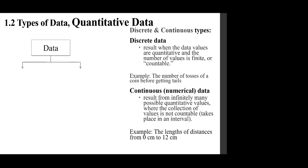Discrete data: results when the data values are quantitative and the number of values is finite or countable. Example: the number of tosses of a coin before getting tails. Continuous data: results from infinitely many possible quantitative values where the collection of values is not countable — it takes place in an interval. Example: lengths of distances from 0 to 12 centimeters. In short, discrete means countable; continuous takes place in an interval.